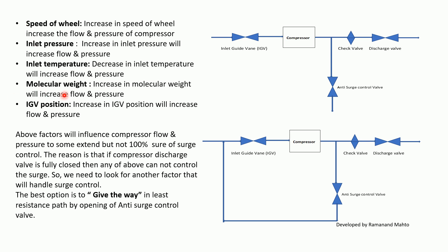We cannot use any of those factors for surge control, because if the compressor discharge valve is fully closed, none of the above parameters can control the surge. If the discharge is closed, none of those factors will help. So we need to look for another factor that will prevent surge.